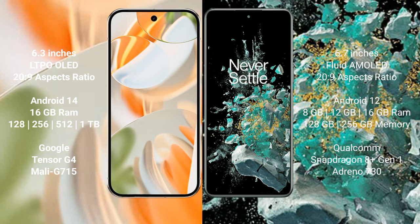Google Pixel 9 Pro runs on the Android 14 operating system. OnePlus 10T runs on the Android 12 operating system.